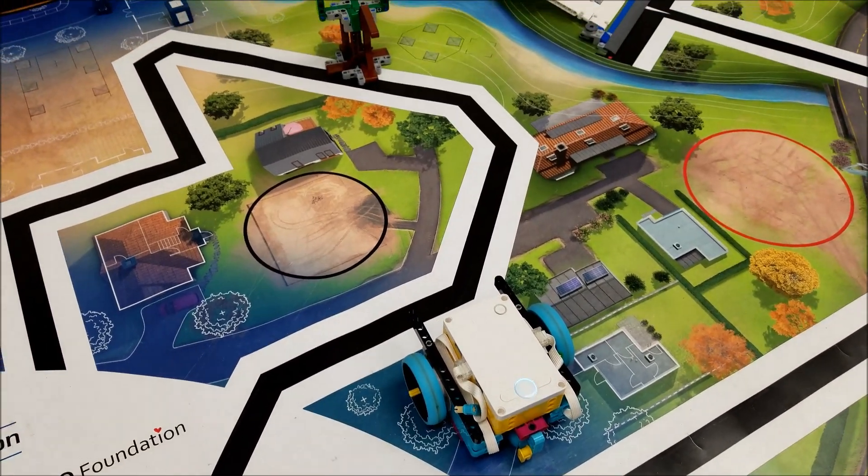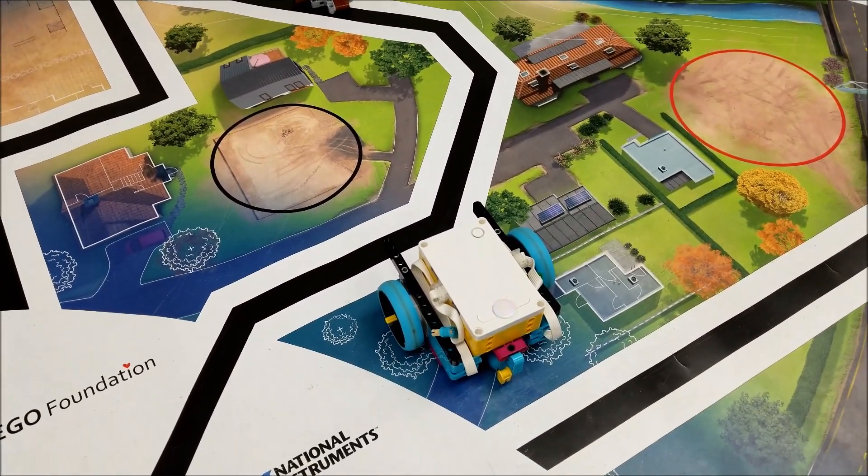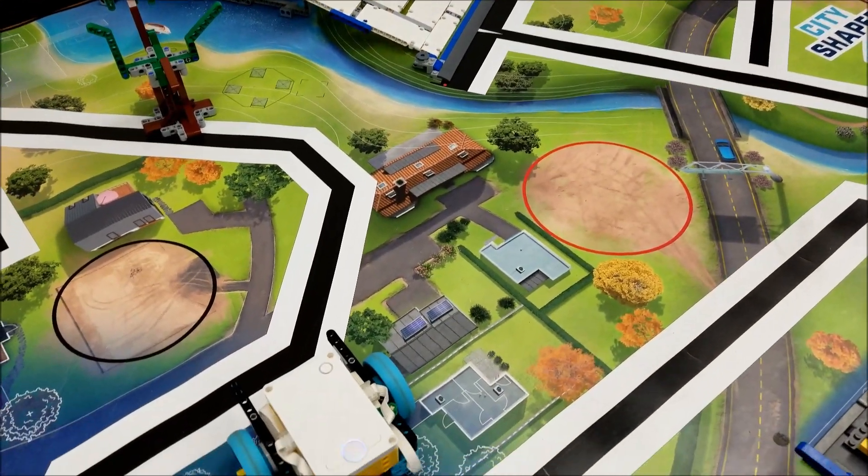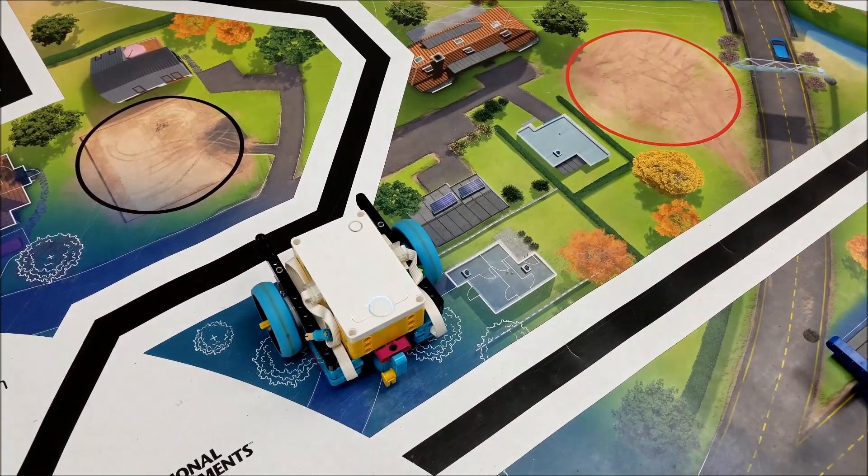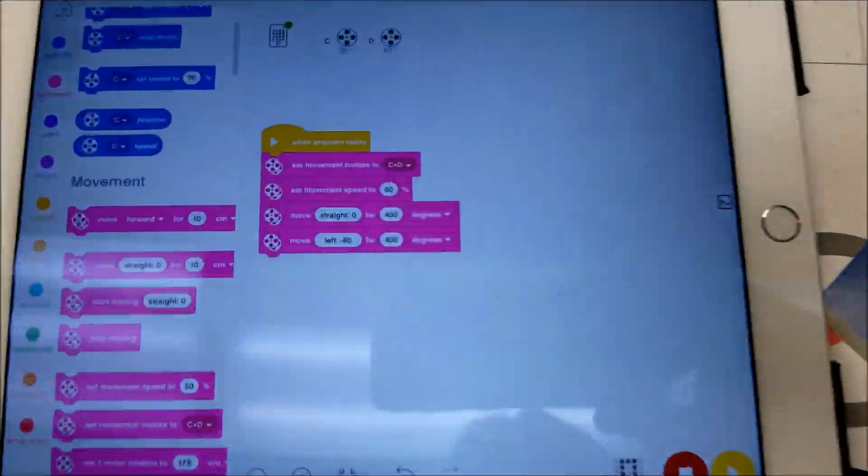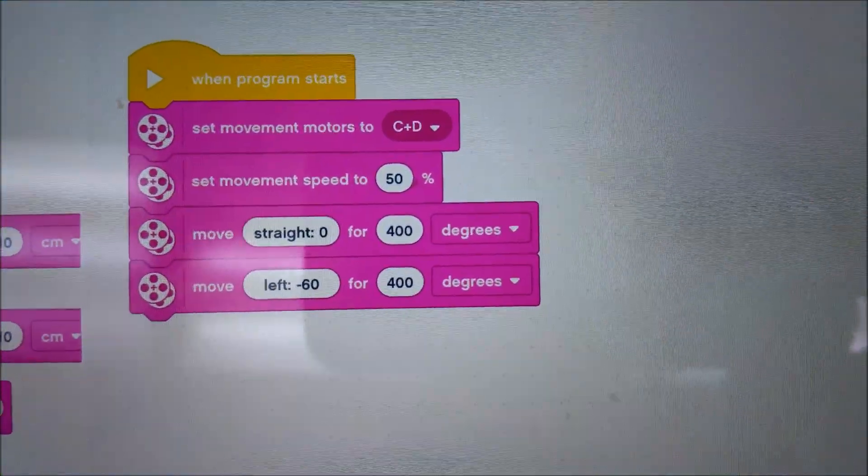So for those of you doing an FLL mission, right there that's how you would possibly go up the ramp or anything that would involve a turn. So that's basically it for going forwards and backwards in the program.